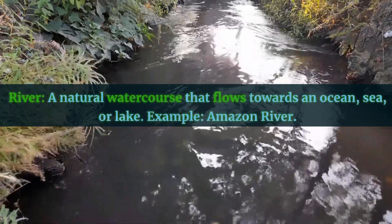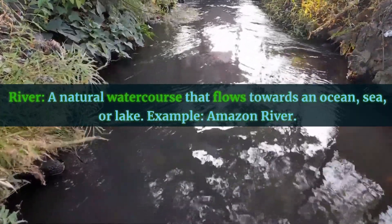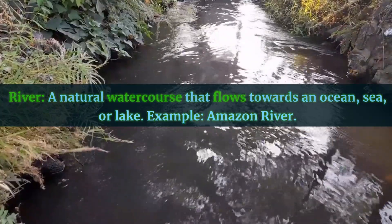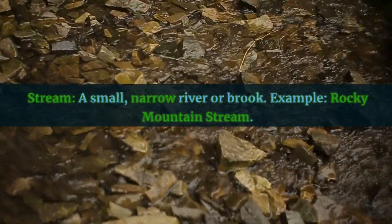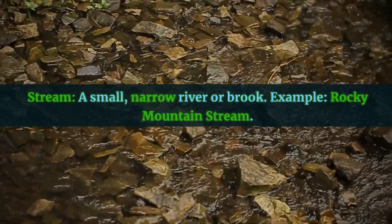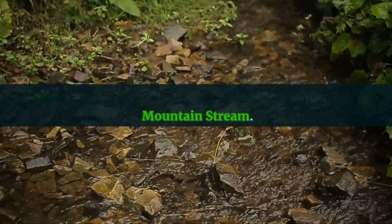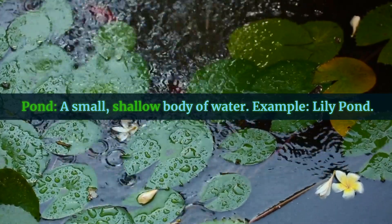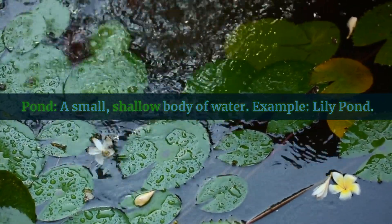River: a natural watercourse that flows towards an ocean, sea, or lake. Example: Amazon River. Stream: a small, narrow river or brook. Example: Rocky Mountain Stream. Pond: a small, shallow body of water. Example: Lily Pond.